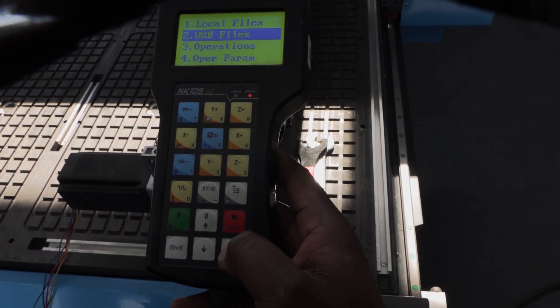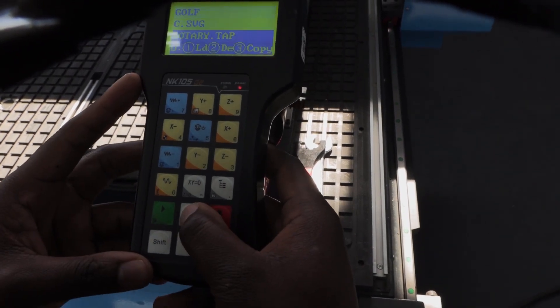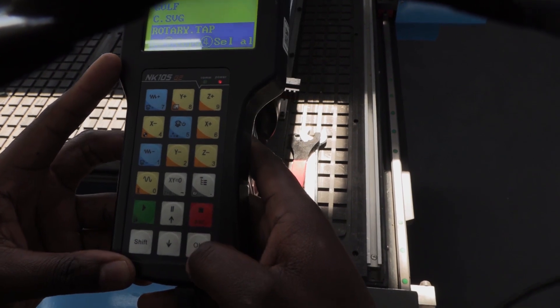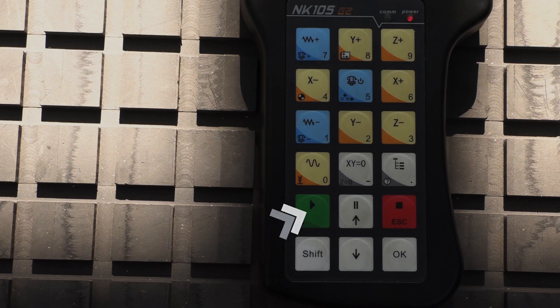On the remote control, we press file and select the design file. Then press ok to load it. And it's done. Just press the green play button and off it goes.